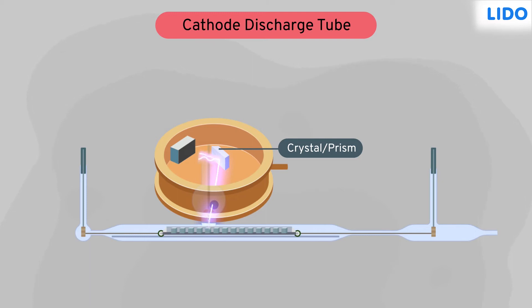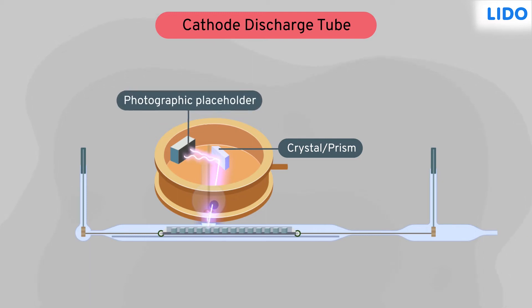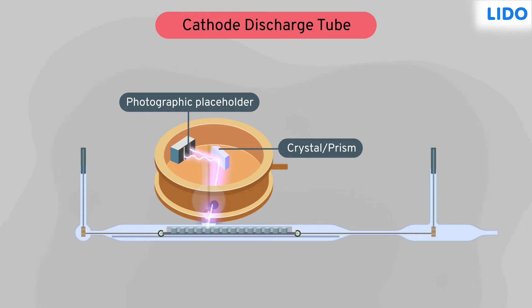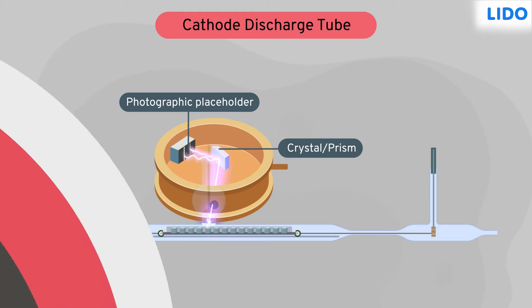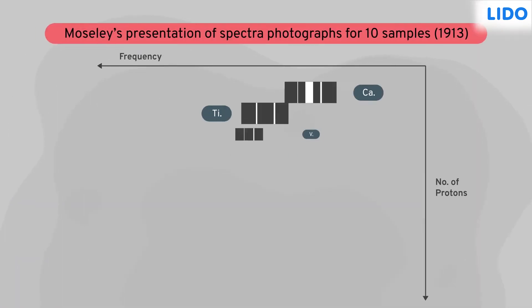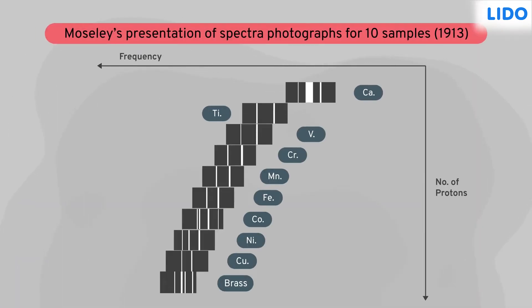He recorded the reflection of the wavelengths on a photographic film and interpreted the lines on the photographic film as unique for every element. The wavelengths were decreasing in a particular pattern.